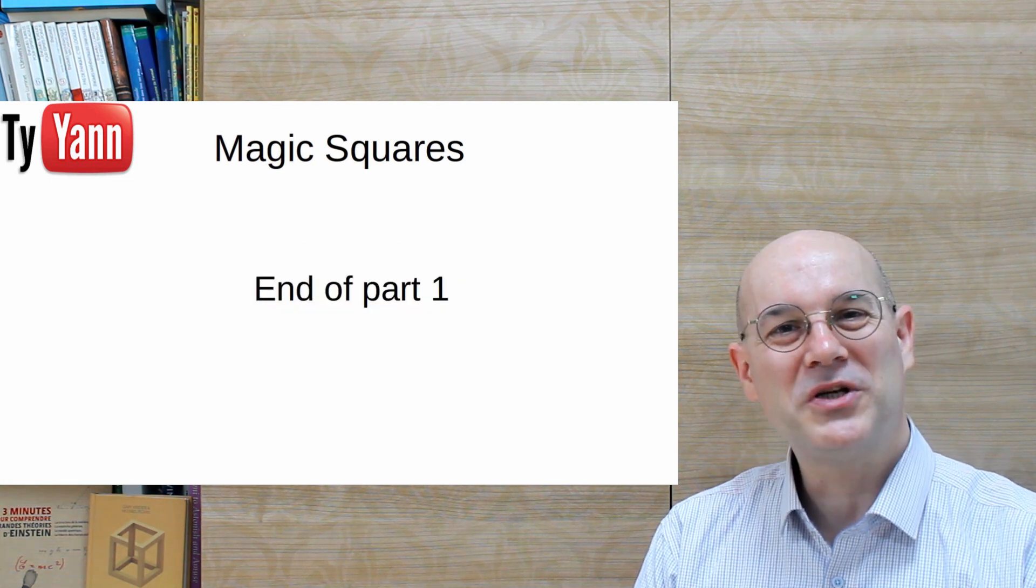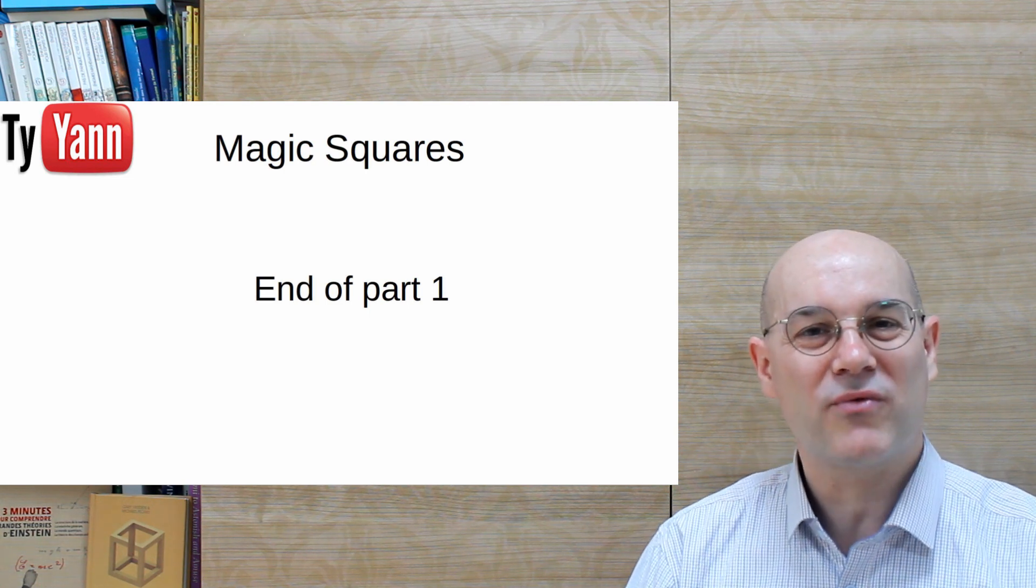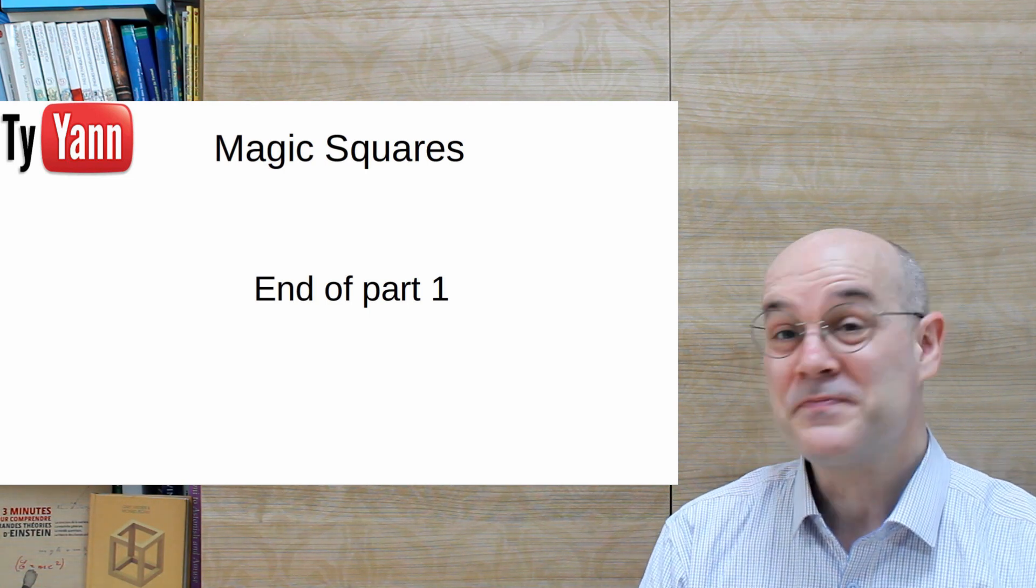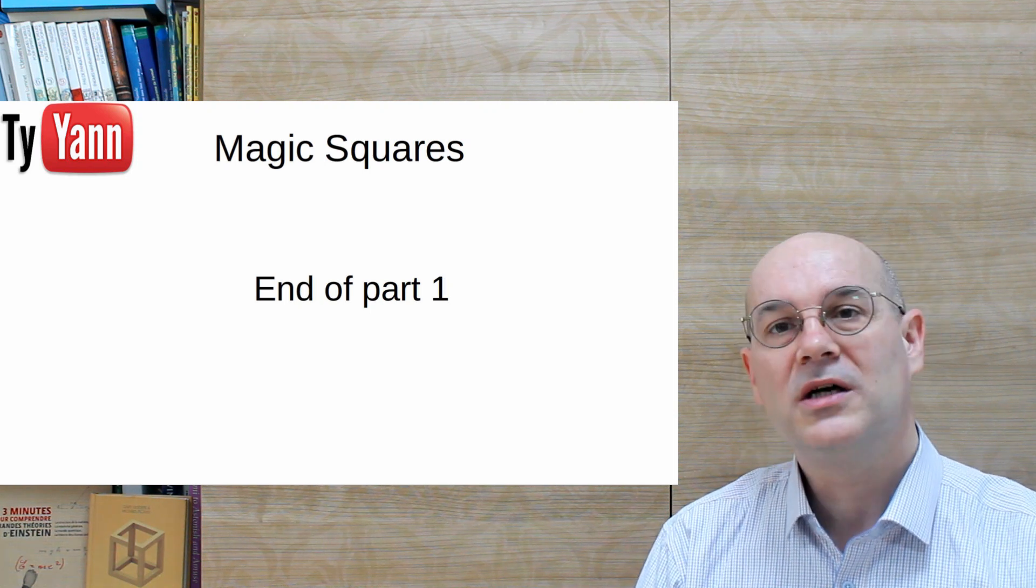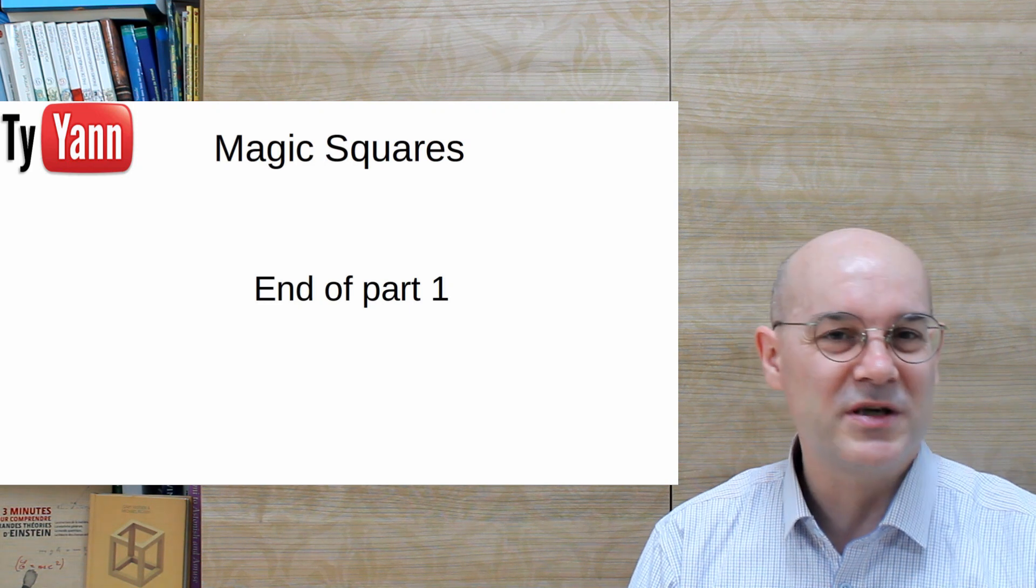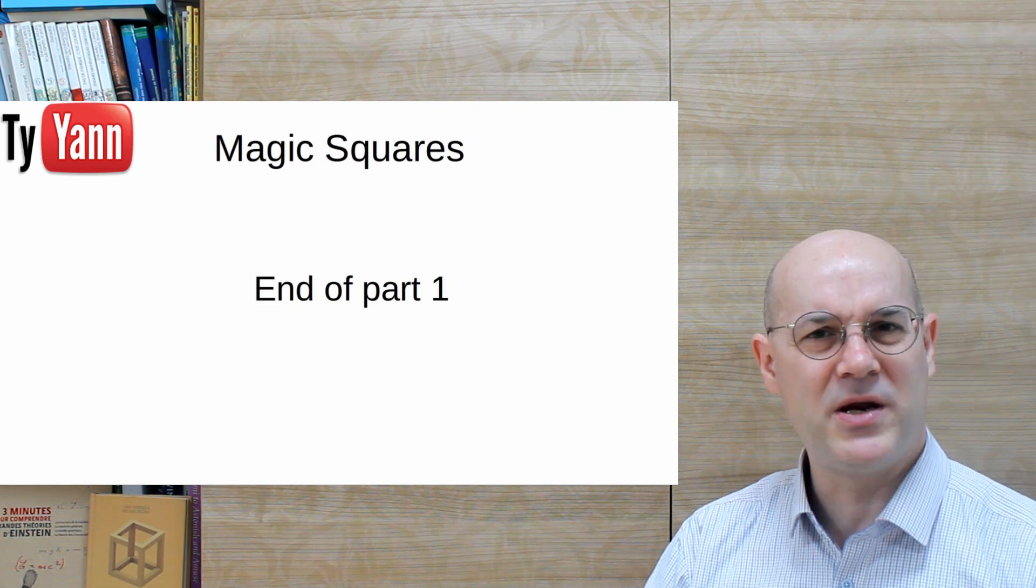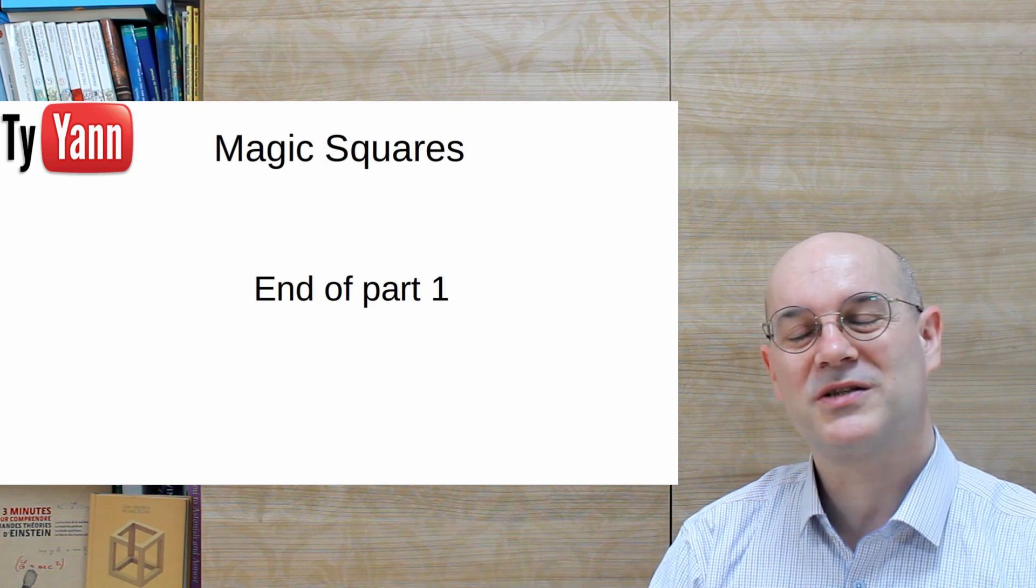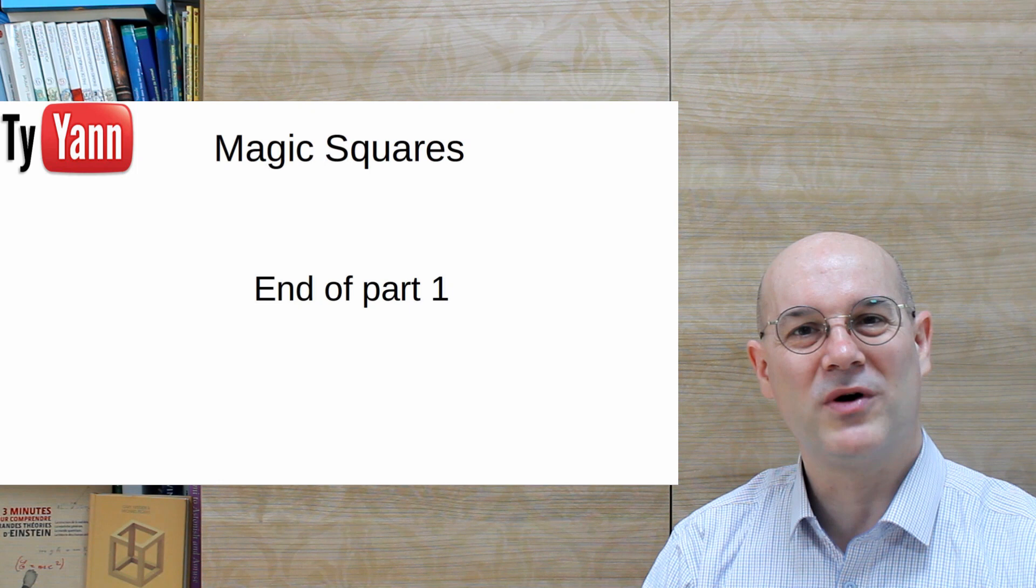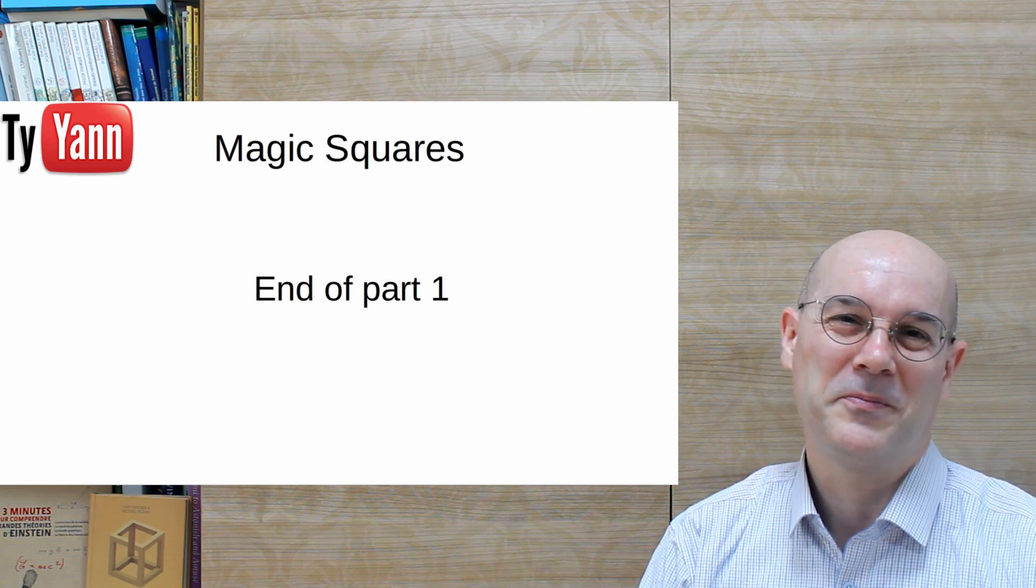So that's it. I hope you enjoyed these little facts about this 3x3 magic square, which is the simplest of all, but still already has a lot of different and interesting properties. So in the next part, we're going to start to build bigger and bigger magic squares, and we're going to check some very, very interesting ones. I hope you enjoyed this video, and see you next time. Bye!